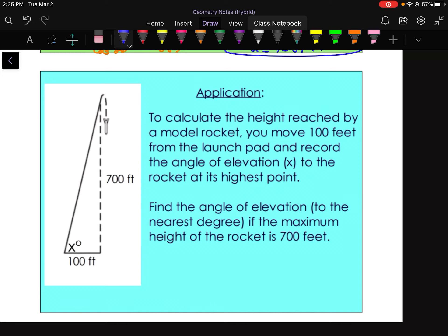All right, why not another one? So to calculate the height reached by a model rocket, you move 100 feet from the launch pad and record the angle of elevation X. So you can see here in the picture, again, the angle of elevation is from the ground or from the bottom of your triangle up to our hypotenuse. To the rocket at its highest point, find the angle of elevation to the nearest degree. So make sure we round appropriately here. If the maximum height of the rocket is 700 feet.